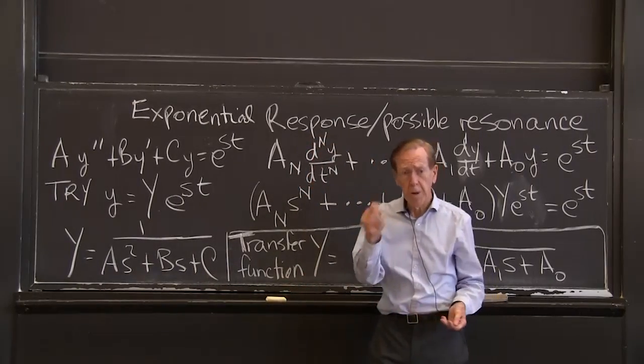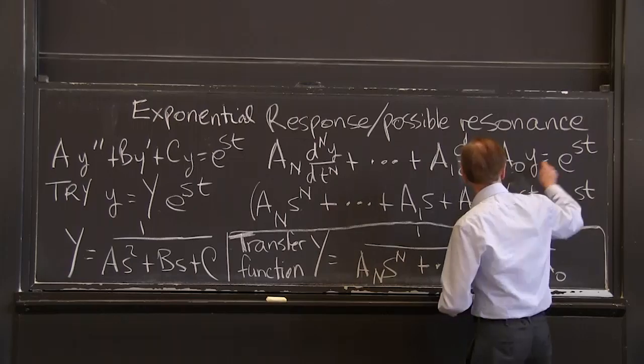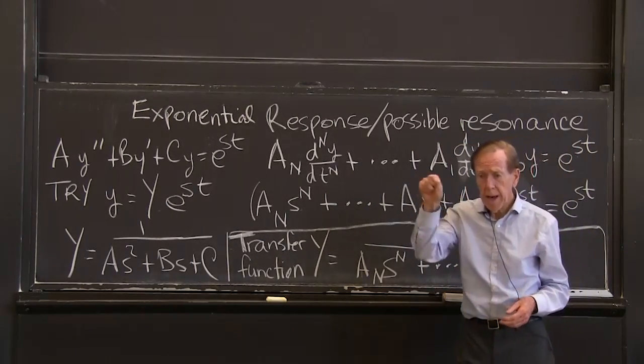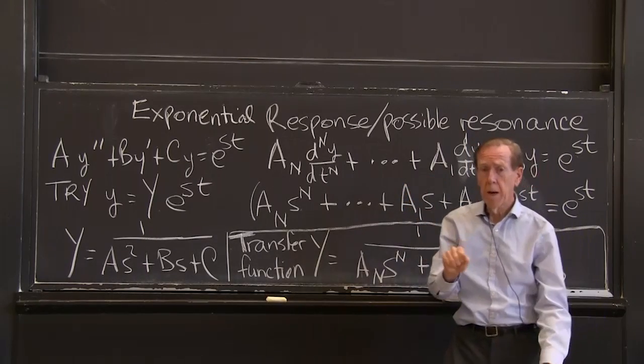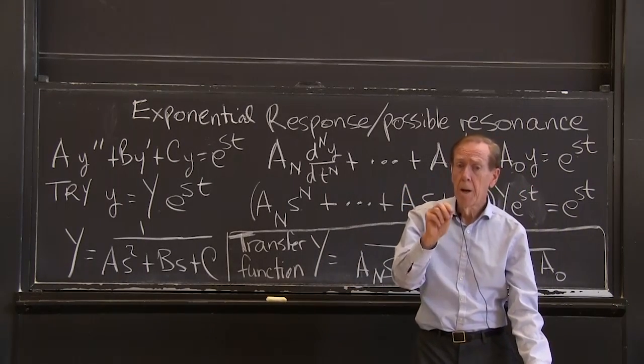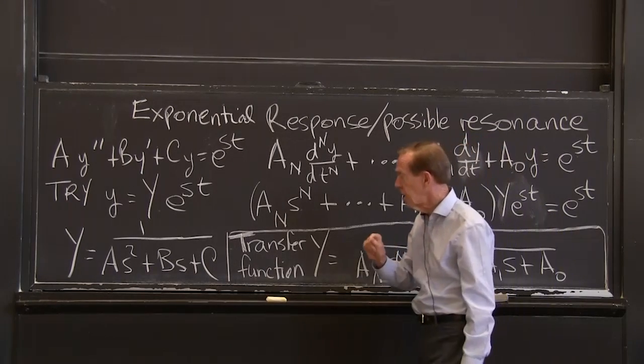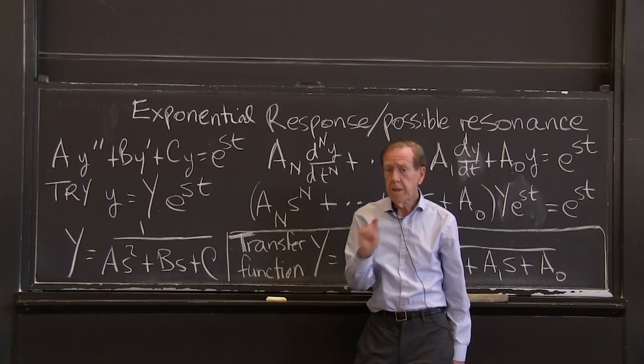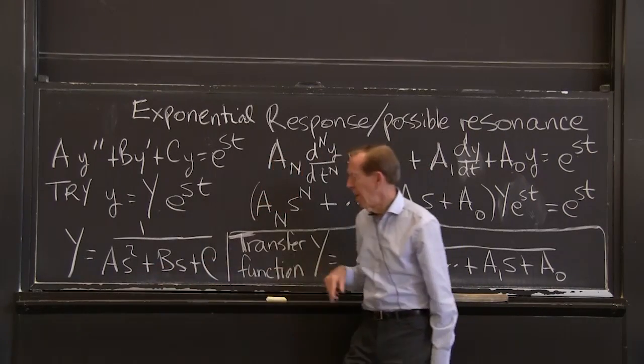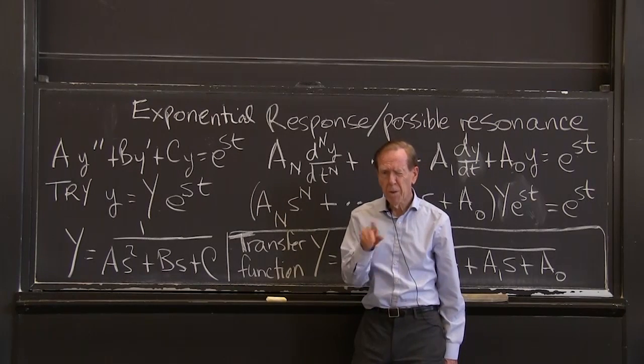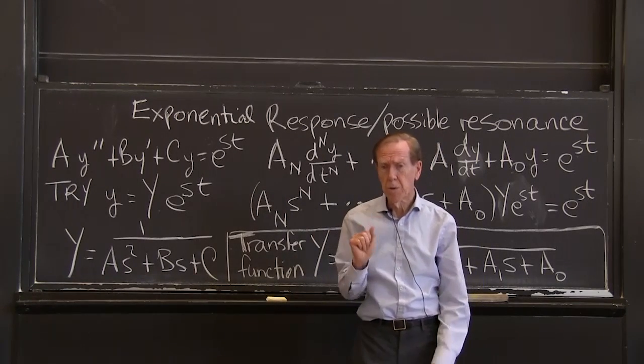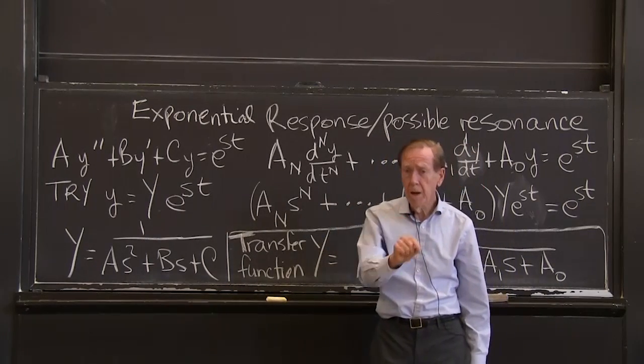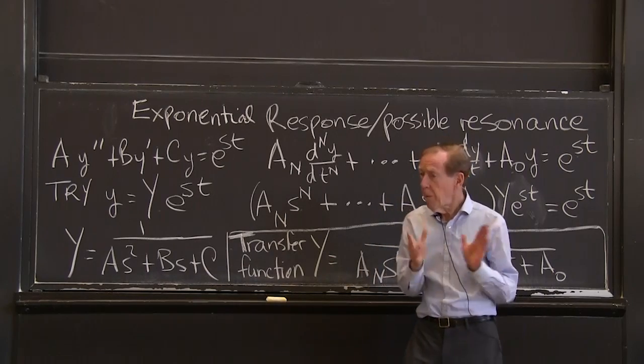One thing can go wrong. Suppose for the particular s, the particular exponent component in the forcing function, suppose that s in the forcing function is also one of the s's in the null solutions. You remember the null solutions, there are two s's, s1 and s2, that make this 0.